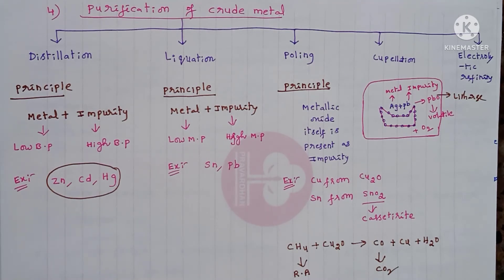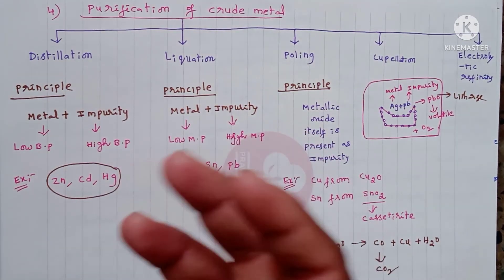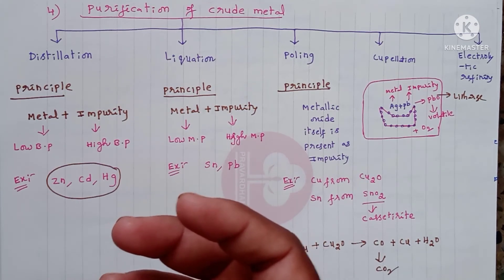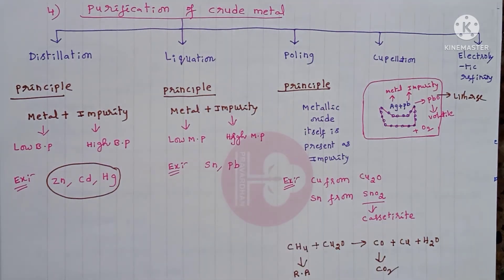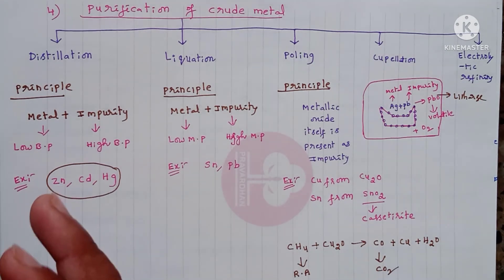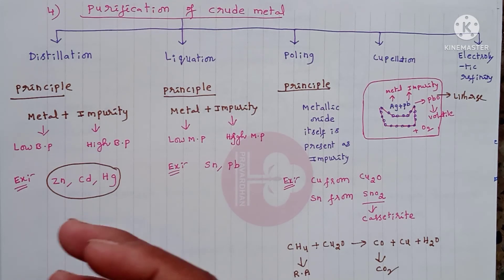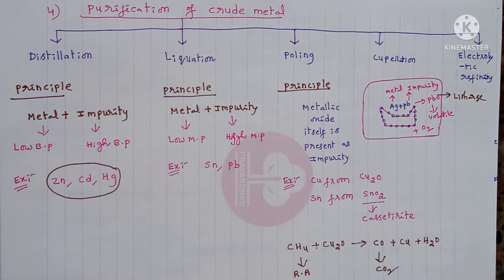In electrolytic refining, pure metal is used as the cathode and impure metal is used as the anode. The solution of the same metal's salt is used as the electrolyte. Both electrodes are connected to a battery and electricity is supplied. At the cathode, we obtain pure metal. This process is called electrolytic refining, and the entire process of extraction and purification of metal from ore is what we call metallurgy.